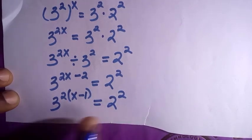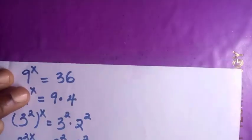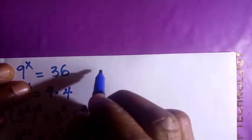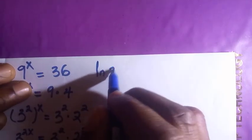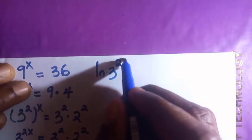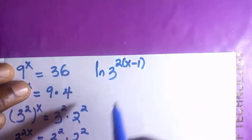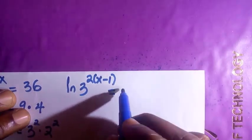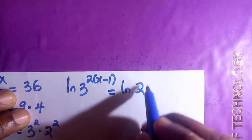So getting to this stage, the best thing we are going to do here is by introducing the logarithm to both sides. So we have ln of 3 raised to the power of 2 bracket x minus 1 equals to ln of 2 raised to the power of 2.